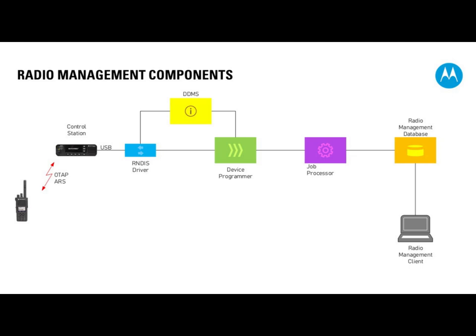ARS is a piece of information the radio sends when it turns on. As the radio turns on, it sends an ARS message to the control station, which sends this data to DDMS. DDMS then tells the device programmer whether radio XYZ is on or off. This prevents the device programmer from trying to program or poll a radio that is not there. If you try to send a job to a radio that is turned off, the device programmer checks with DDMS first.